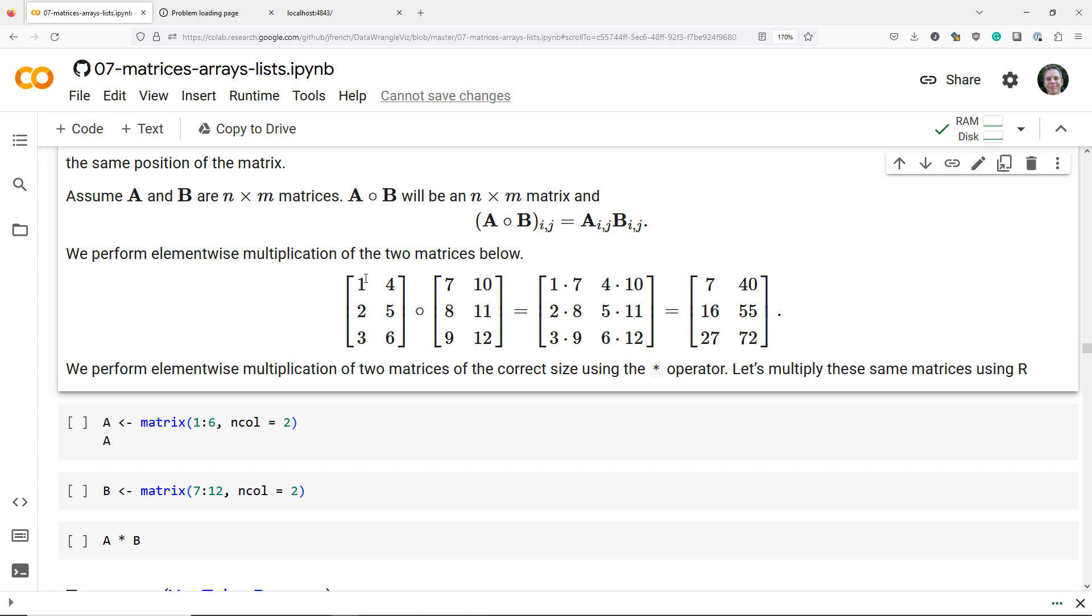So let's say that we have two matrices that have this form right here. We can see that they both have three rows and two columns, and so they have the same dimension. So we can do this element-wise matrix multiplication. I simply find the elements in the exact same position of both of these matrices and multiply them together.